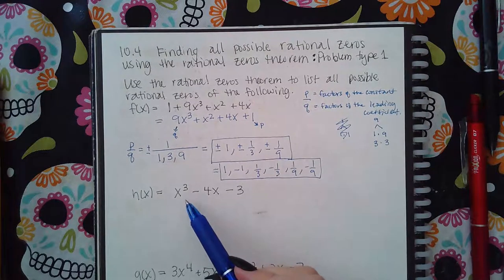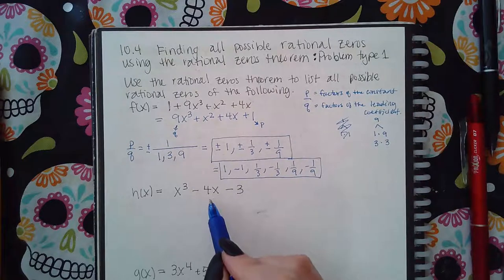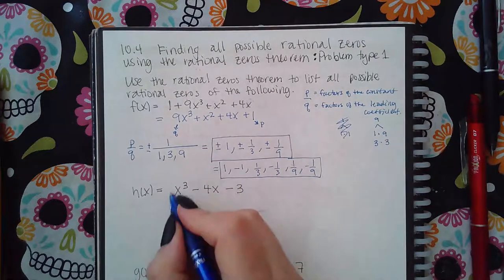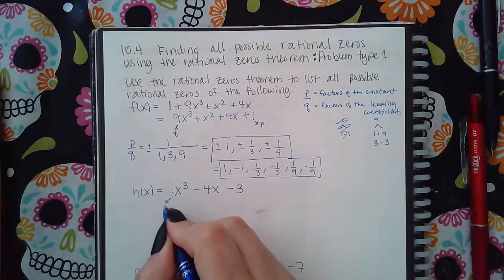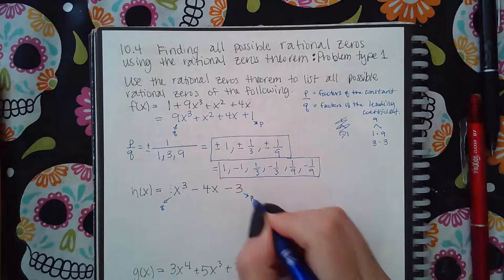Now, same thing here. So I am missing a term, but that's not necessarily important as long as I have my leading coefficient, which is a 1, which will give me the Q, and my constant term, which will give me the P.